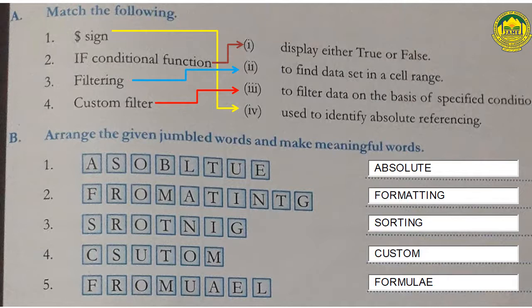Arrange the given jumbled words and make meaningful words. Number one: A B S O L U T E - absolute. Number two: F O R M A T T I N G - formatting. Number three: S O R T I N G - sorting. Number four: C U S T O M - custom. Number five: F O R M U L A E - formulae.